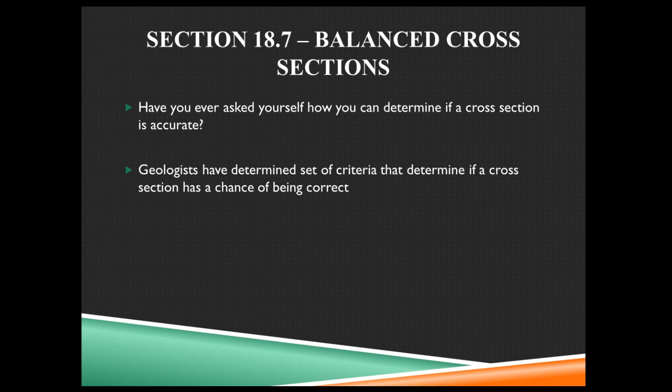To help make sure that cross sections are as accurate as possible, geologists have a set of criteria to determine if a cross section has a chance of being correct. We know that we're not getting everything perfect, but we want to know, does it even have a chance of being correct or really close to correct? And so there are four fundamental tests that we have to use when creating a cross section.